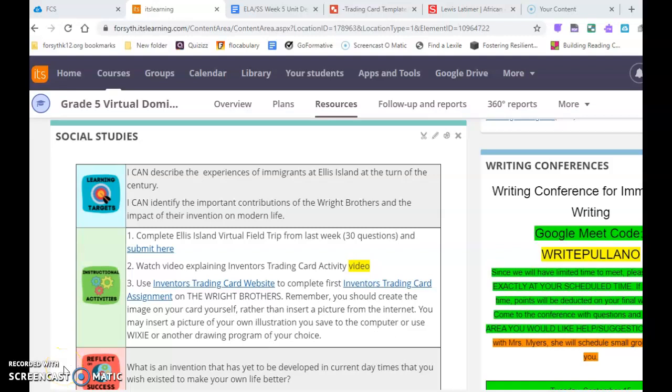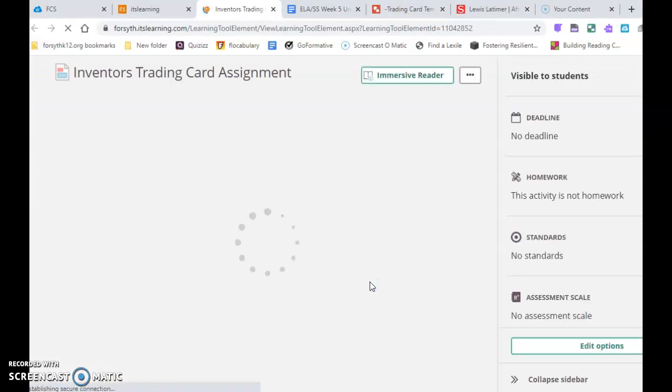Hey guys, today I'm going to explain our activity for this week. We are going to be studying different inventors around the turn of the century for our social studies unit, but we're going to be able to do something pretty fun to do a little research and then show what you've learned. After you submit your virtual field trip today, you are going to go to this link to an assignment. So this is the website you will use. This is the actual assignment here, so I'll click on that.